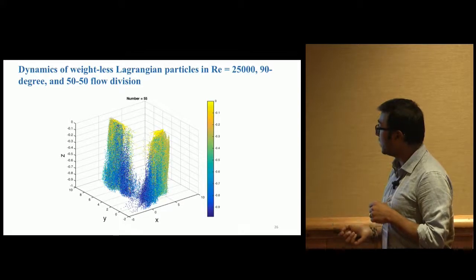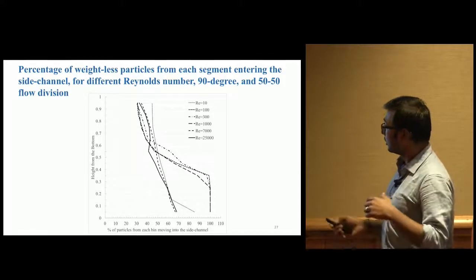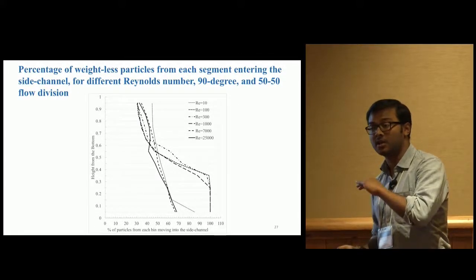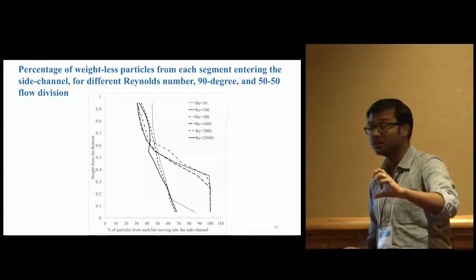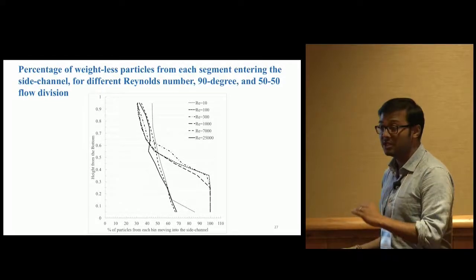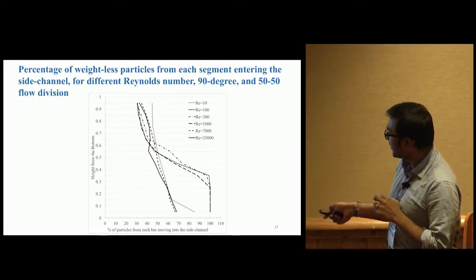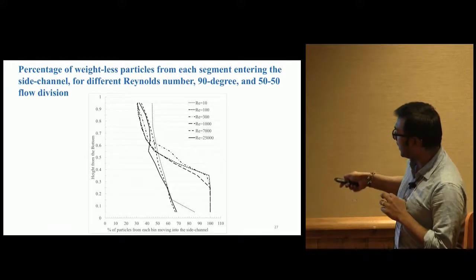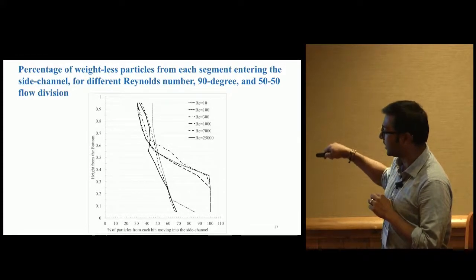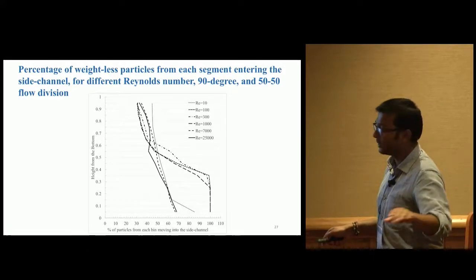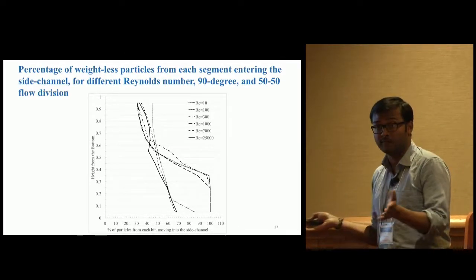We divided the depth into 10 bins and counted from each bin how many went into the side channel. For laminar cases, from the first 40% of depth, almost all flow went into the side channel. In turbulent cases, that number is less, but the phenomenon is still strong.